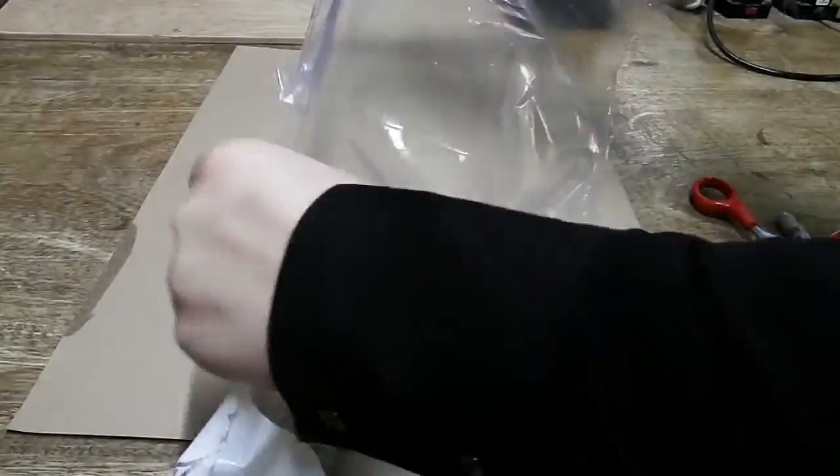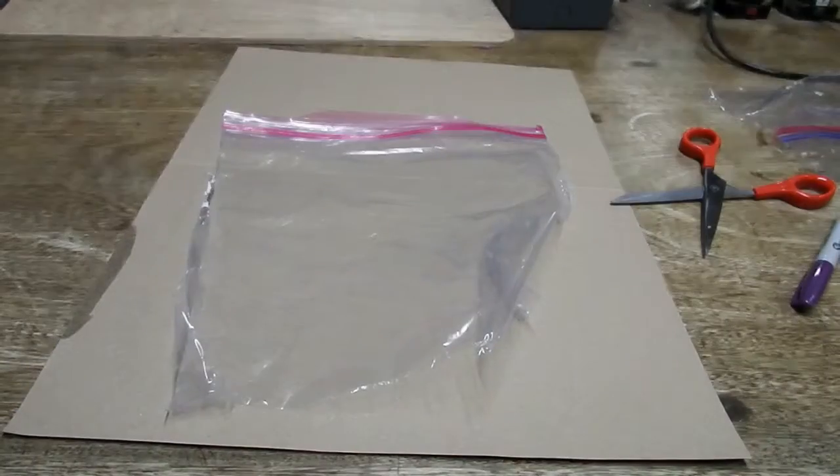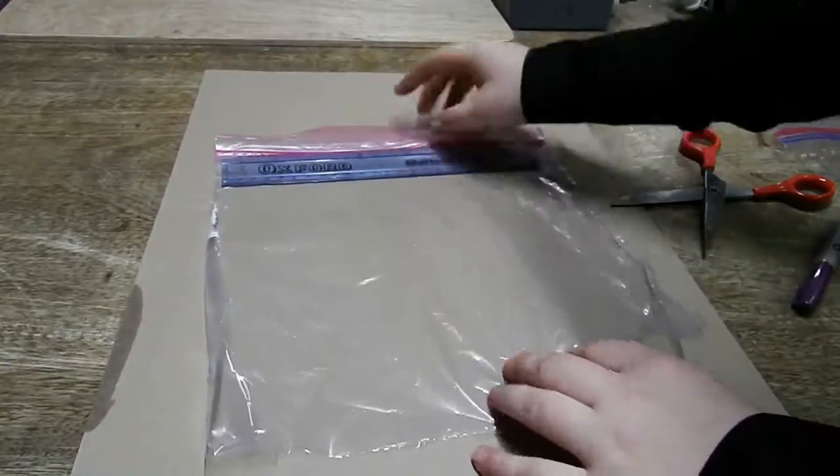Now you need to create grids so you can quantify the rate of ice melt. Simply cut a sandwich bag in half and draw your grid lines on with a sharpie.